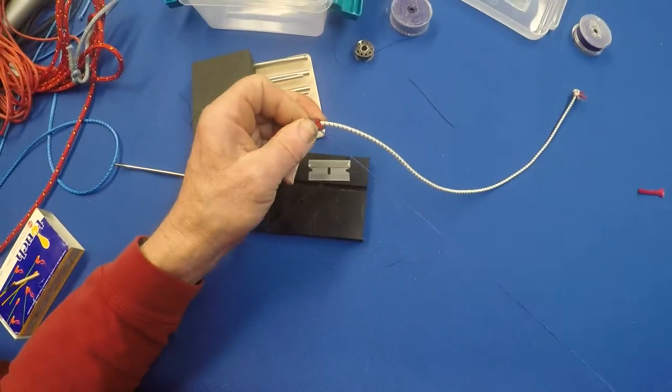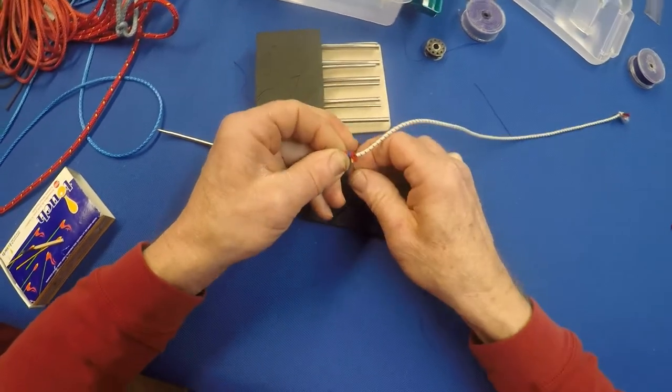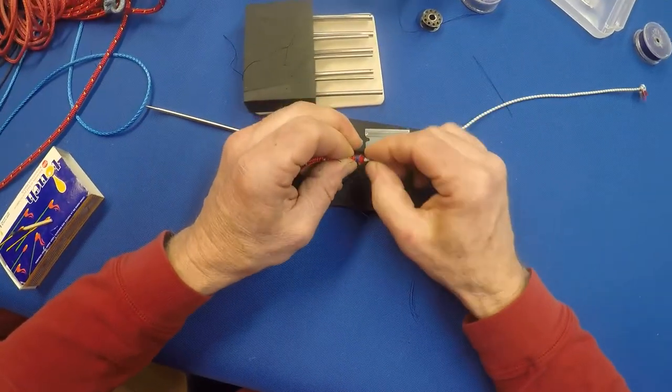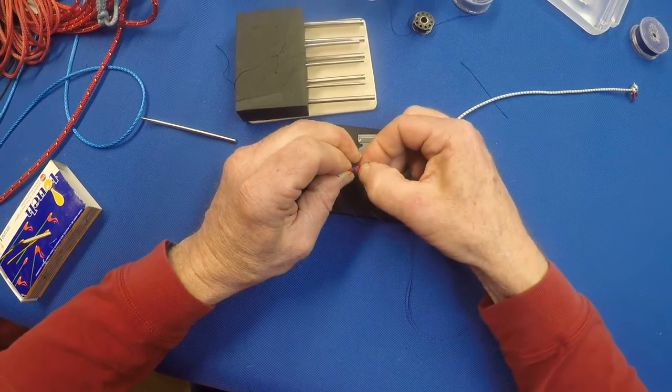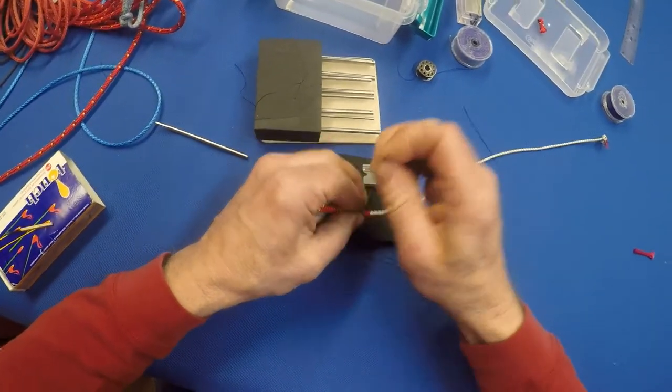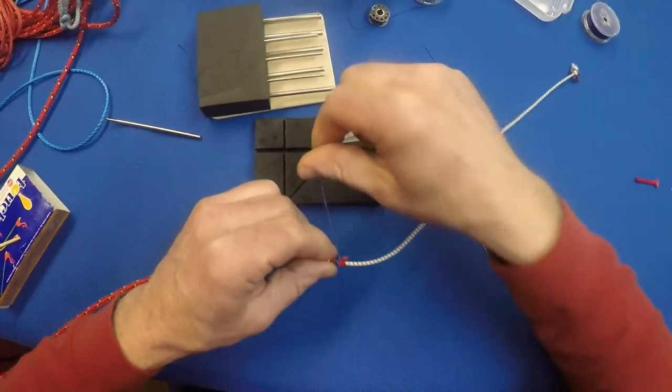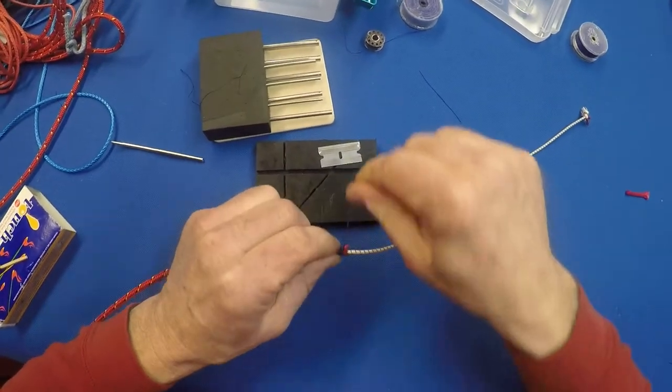Okay, go around four or five times. I'm going to go back through the line again with the needle. Try to come out right next to the thread I already have on there. Keep that pulled up tight. Go around. Nothing has to be perfect about this.